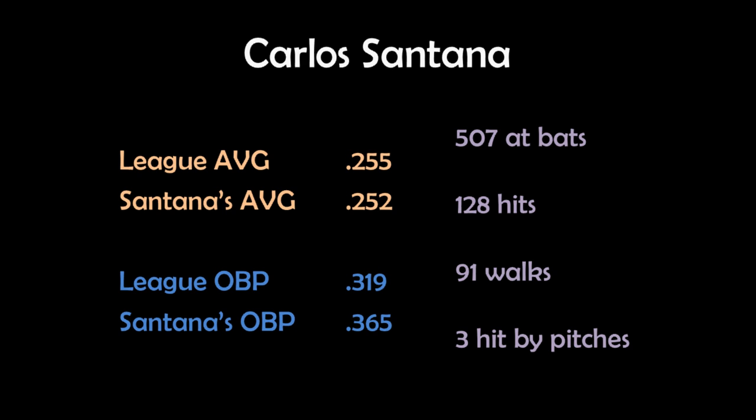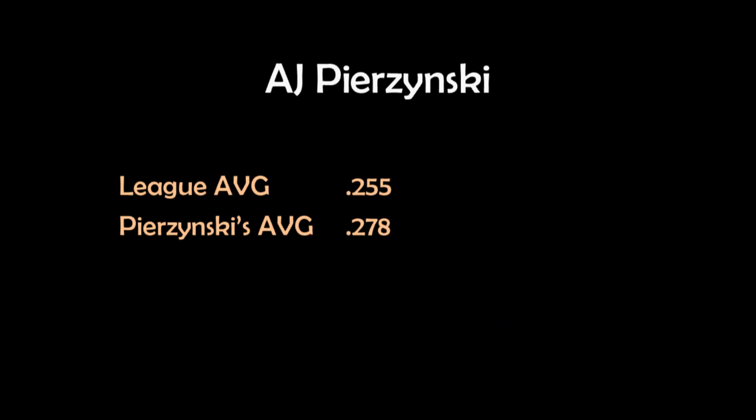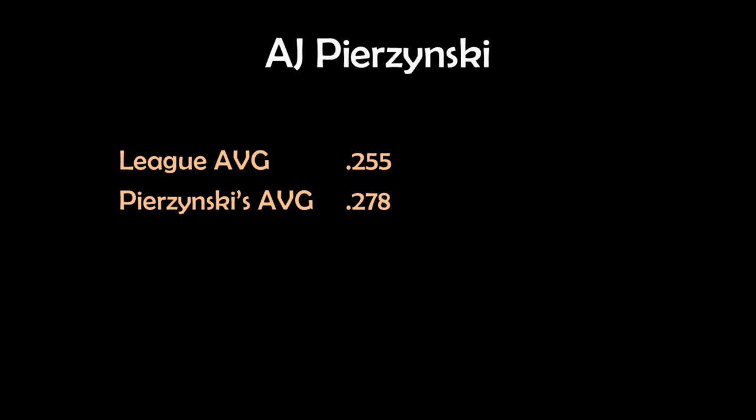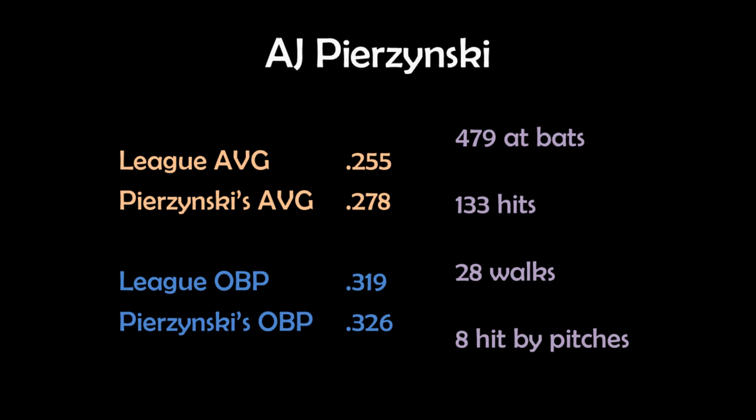Conversely, another catcher, AJ Pierzynski, hit .278 last year, which is higher than the league average. But his on-base percentage was only .326, just above the league average. Again, we see this is mainly due to walks — Pierzynski only had five more hits than Santana, but he walked 63 fewer times.